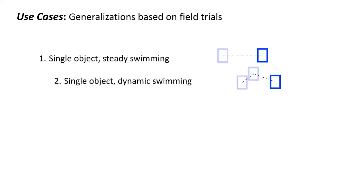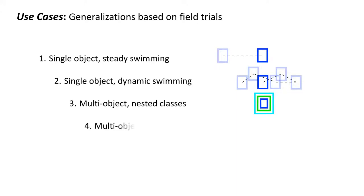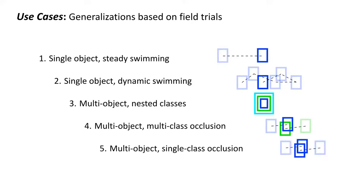After multiple field trials, we identified five generalized use cases that we evaluated our ML tracking algorithms against, and they include single objects that are steadily swimming, single objects that are dynamically swimming, multiple objects that are often nested classes, multiple objects that are multi-class occlusions, and finally multi-objects that are single class occlusions.